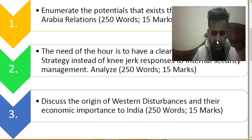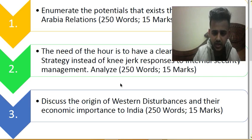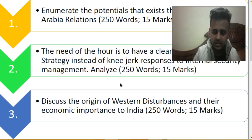The third question is: discuss the origin of western disturbances and their economic importance to India. This static question is from geography — we don't pick random topics. We have already covered history, modern history, India's culture, and Indian society, and now we are covering the geography portion. This week we will be giving questions from geography, as we did last week.